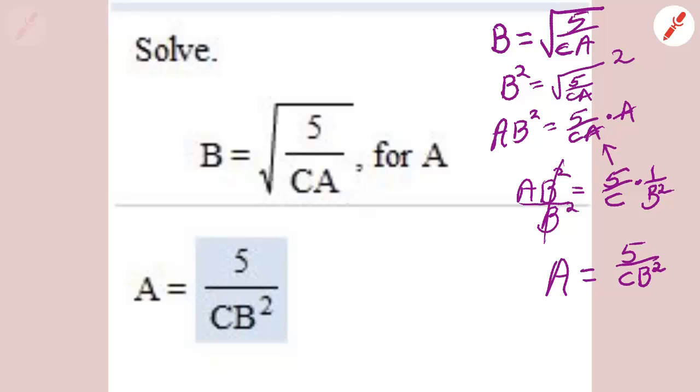Actually, the correct way to say the answer, so I'm even going to correct my math lab, is A equals 5 over B squared C. We try to keep these things in alphabetical order. Let's go on.